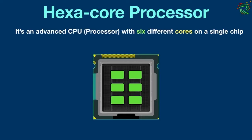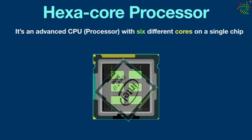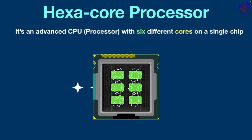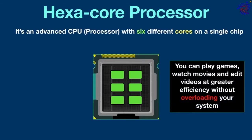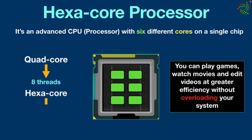Six different execution units are put together on one chip, and these six independent cores are utilized to execute and process data. Intel first released the i7 hexa core processor in 2010. Hexa core performs tasks faster and with better efficiency than dual core and quad core CPUs. It is much more comfortable running high-demanding applications — you can play games, watch movies, and edit videos at greater efficiency without overloading your system. A quad core processor has eight threads maximum, while a hexa core can have up to 12 threads, making it much better. It is mostly used in smartphones.